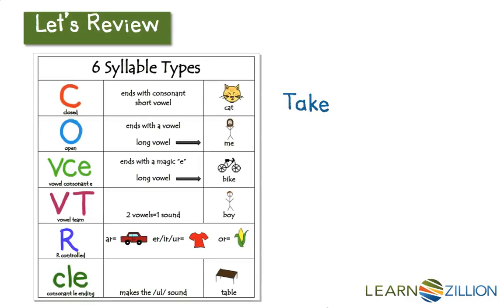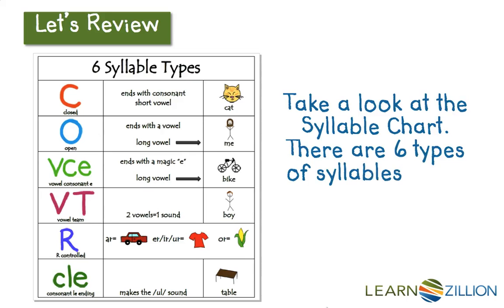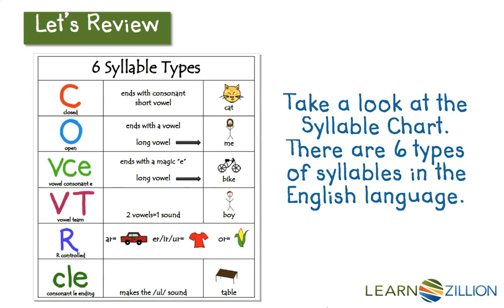Let's review. Take a look at your syllables chart. There are six types of syllables in the English language, and using the syllable rules can be helpful to read new or tricky words. R-controlled syllables are syllables that have a vowel followed by the letter R. The R changes the way the vowel sounds, creating a whole new sound.